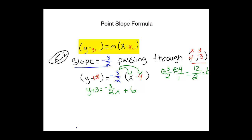Solve for y. Subtract 3 from both sides. We have y is equal to negative 3 over 2x plus 3.